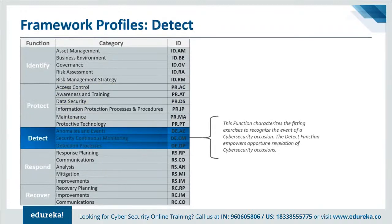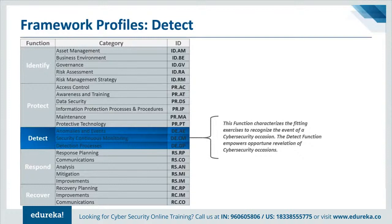The Detect function is used to develop and implement appropriate activities to identify the occurrence of a cybersecurity event. The Detect function enables timely discovery of cybersecurity events. Examples of outcome categories within this function include anomalies and events, security continuous monitoring, and detection processes.